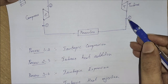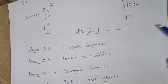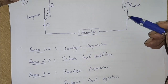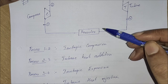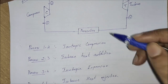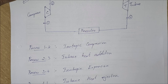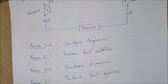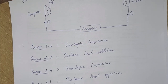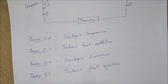Moving on to the final process, four to one, we have a pre-cooler. The gas coming out from the turbine moves to the pre-cooler, where the air gets cooled — so it is a heat rejection process, as the temperature of the air is decreasing. This process is an isobaric heat rejection process, taking place at constant pressure.